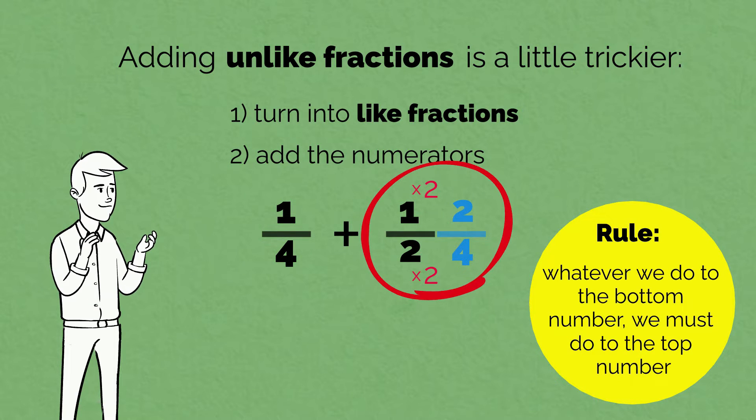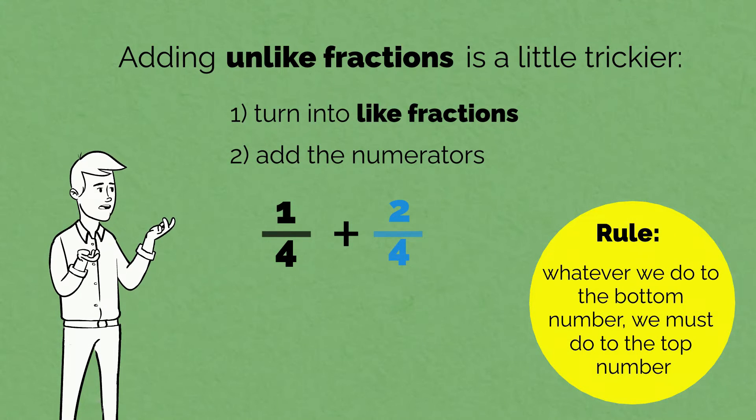We have found an equivalent fraction of 1 half: 2 quarters. 1 half and 2 quarters are the same. Now we have two like fractions, 1 quarter and 2 quarters. We can add them. 1 quarter plus 2 quarters equals 3 quarters.